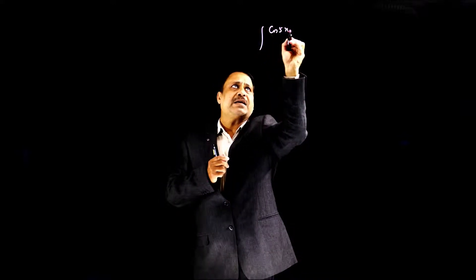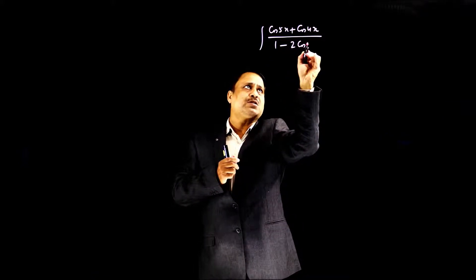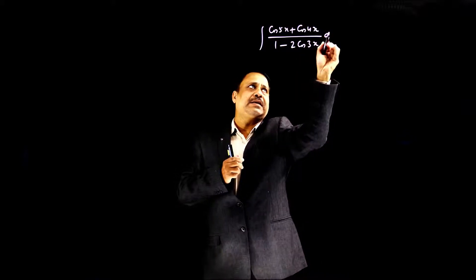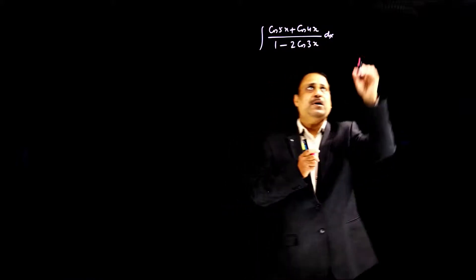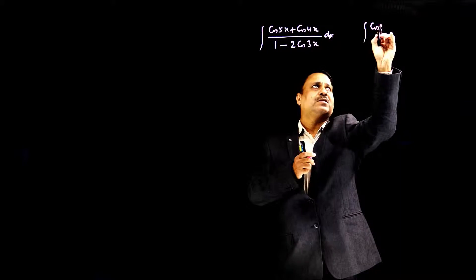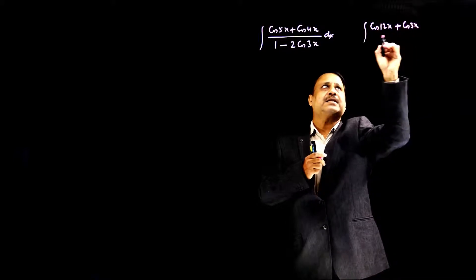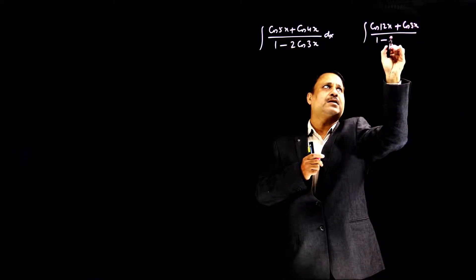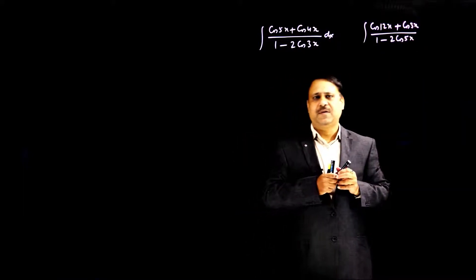These are very beautiful problems — how we can handle them by some simple multiplication or division. For example, I have the question: integration of (cos5x + cos4x) / (1 − 2cos3x) dx. There can be so many problems of this type. For example, you can have (cos12x + cos3x) / (1 − 2cos5x), and so on. You can make so many problems.